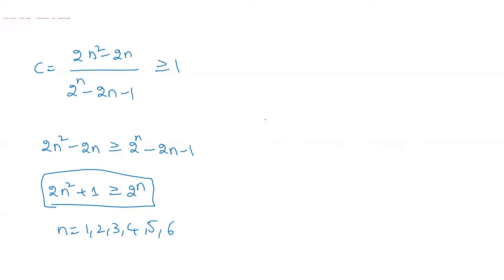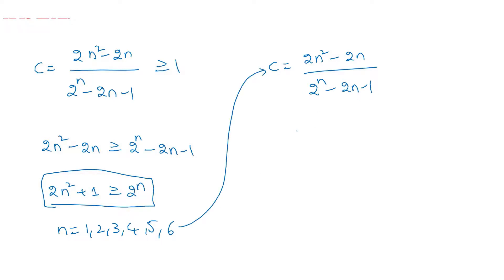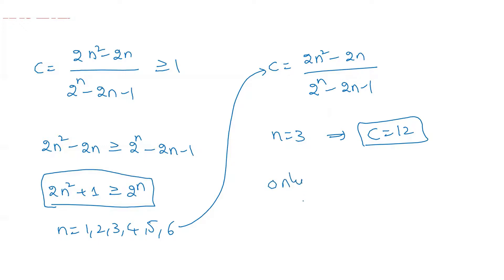Now we substitute n = 1, 2, 3, 4, 5, 6 into c = (2n² − 2n) / (2^n − 2n − 1) to check which gives a positive integer. For n = 1, the numerator is zero, so c = 0 — not valid. Only for n = 3 do we get c as a positive integer, which gives c = 12.